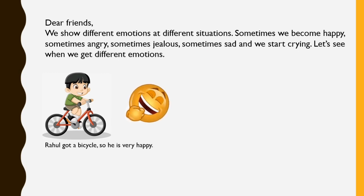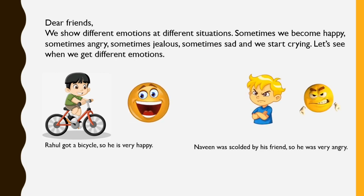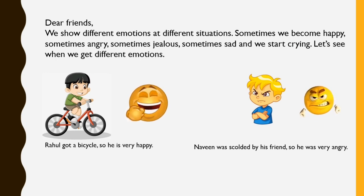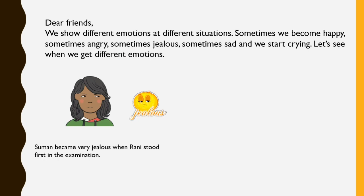Here is a boy named Rahul. Rahul got a bicycle and he became very happy. Here is Naveen, and one of his friends scolded Naveen, so he was very angry at that time. Here is Suman — Suman got marks in the examination, and Suman's friend Rani also got marks. But unfortunately Rani stood first in the examination while Suman could not. So Suman became very jealous when Rani stood first.